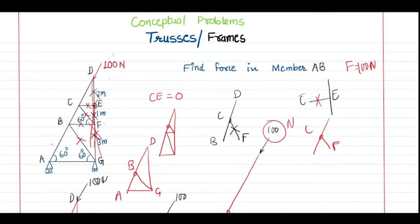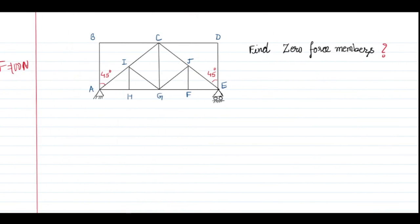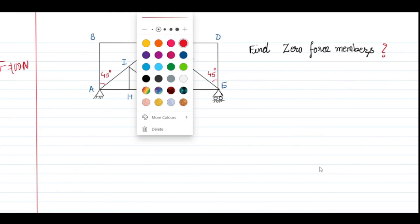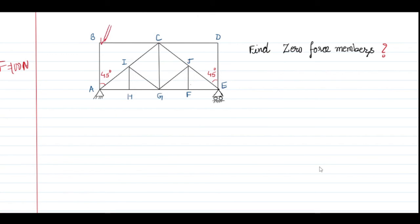Now here is another problem for you to solve in just 20 seconds: identify the zero force members in this given truss. There are forces of 100 Newton, 200 Newton, and 300 Newton applied. Starting from joint F, FJ is a side branch, so FJ is a zero force member. Similarly, at joint H, the member HI is a side branch, so HI is also a zero force member.